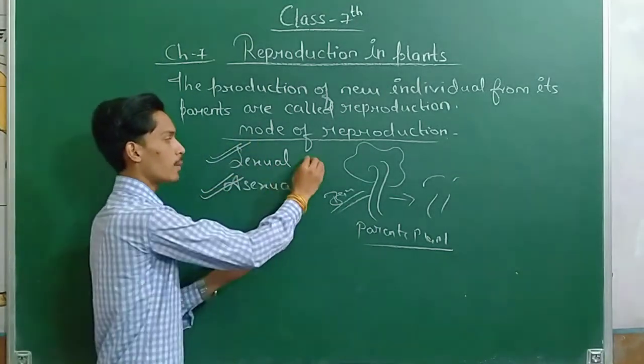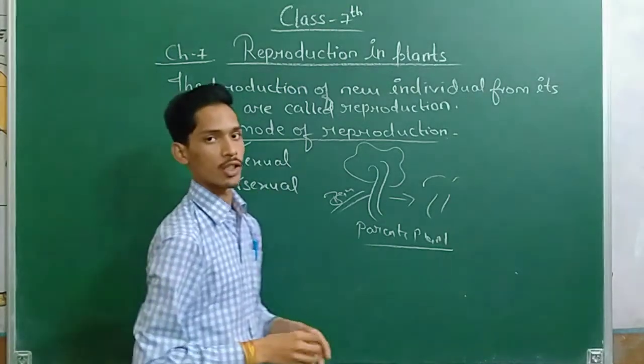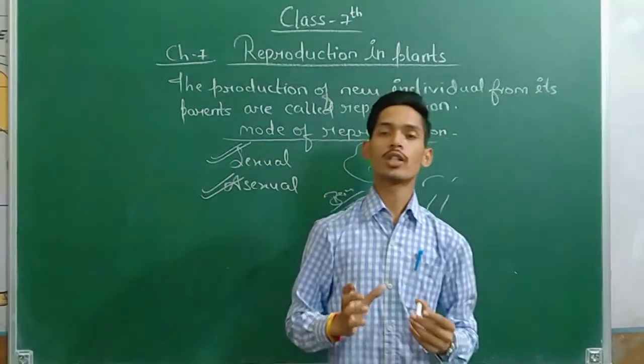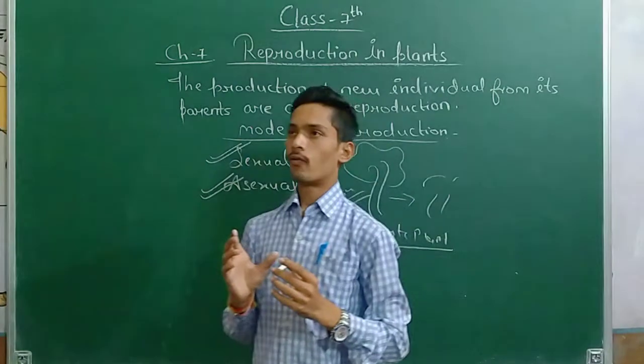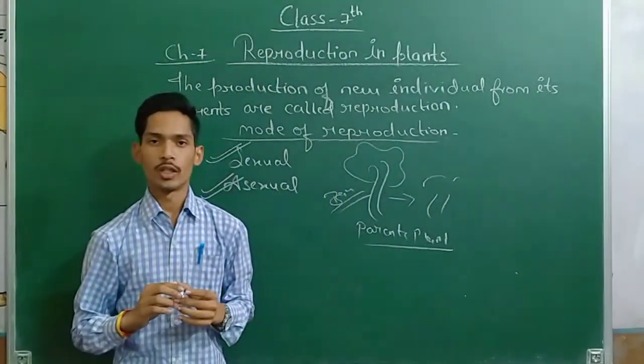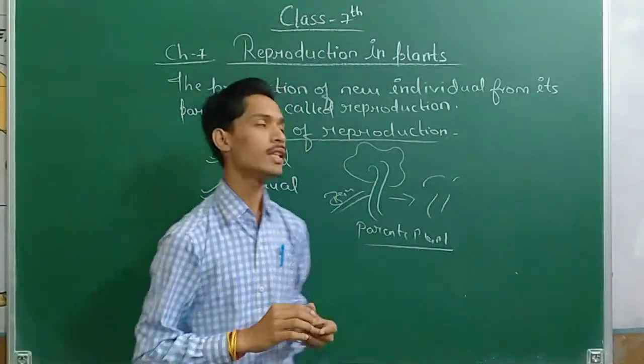Sexual Reproduction of Plants and Asexual Reproduction of Plants. Sexual Reproduction means, for example, flowering plants produce seeds.